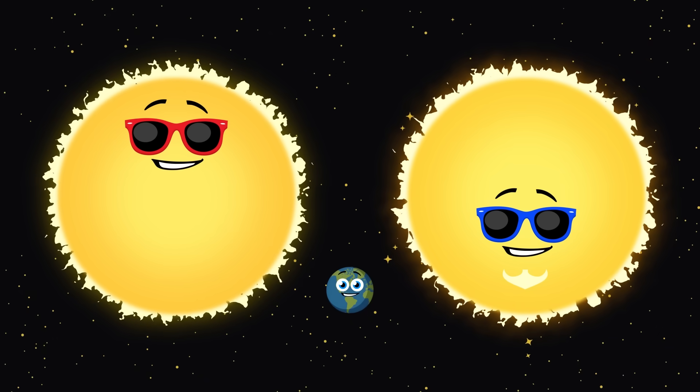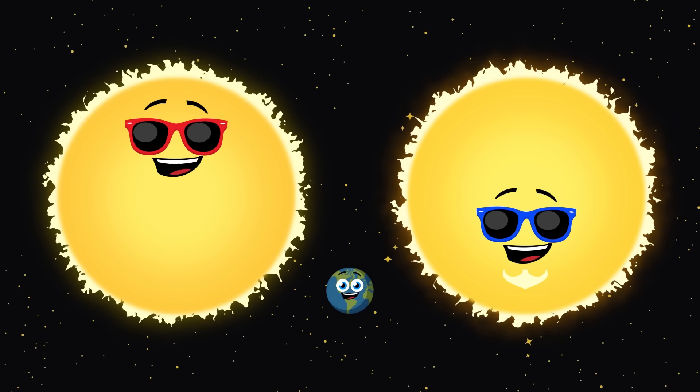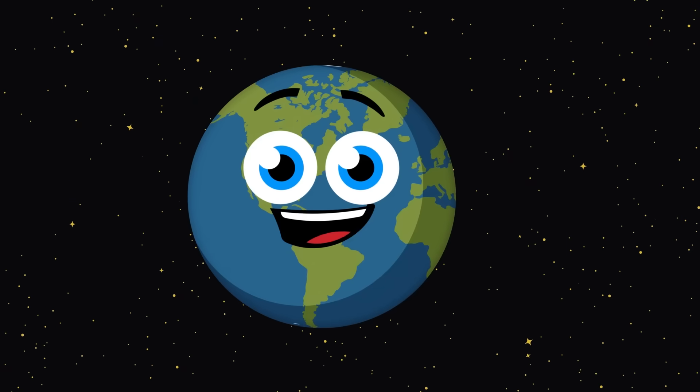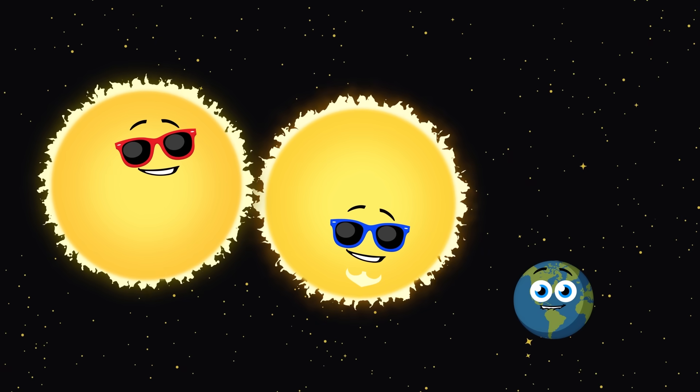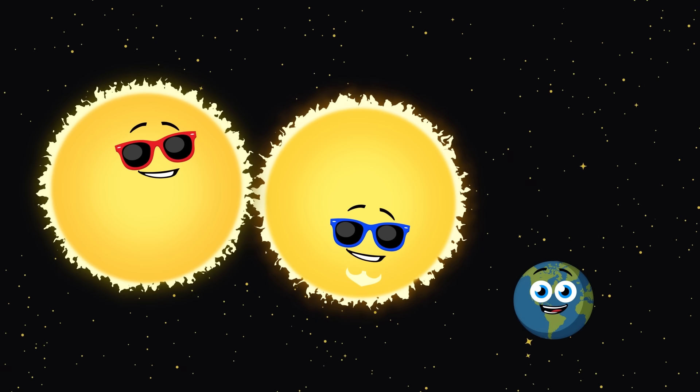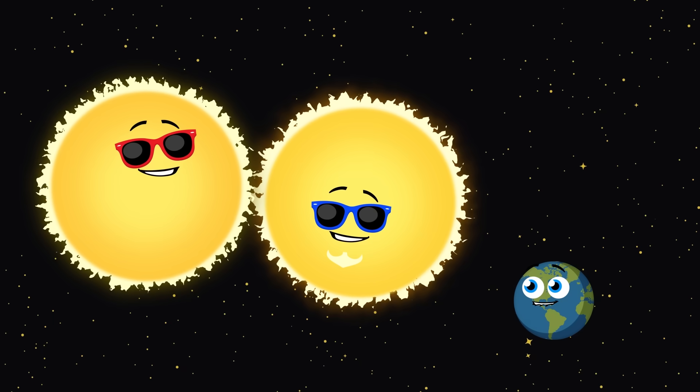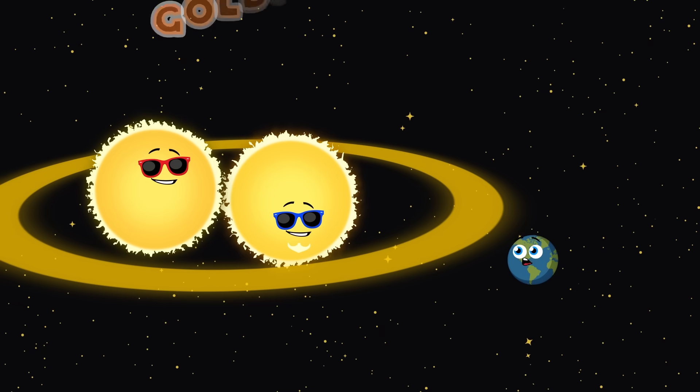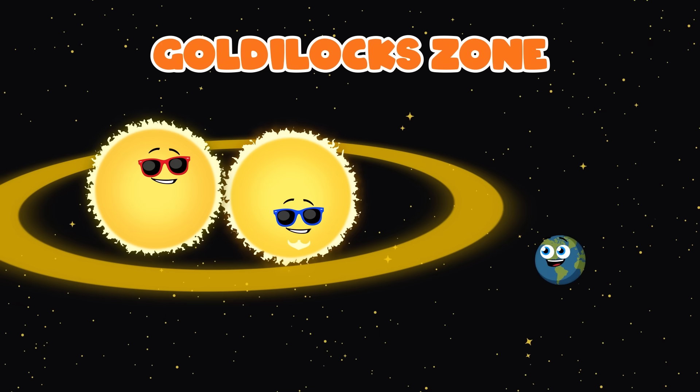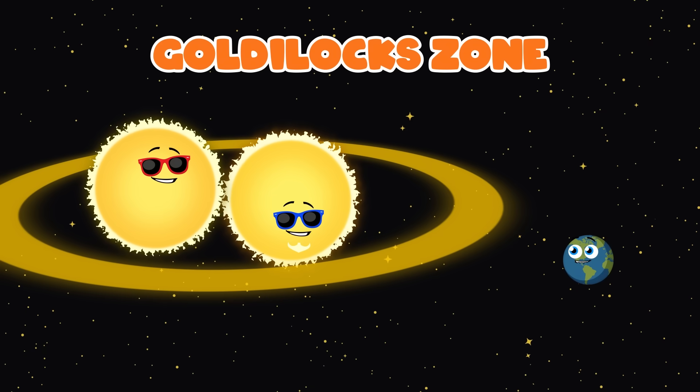If the stars were orbited by Earth at a safe distance, how far would the Earth have to orbit for life to exist? Earth would have to move past the current Goldilocks zone. That's a safe area we orbit our sun for life to grow.